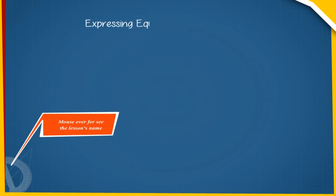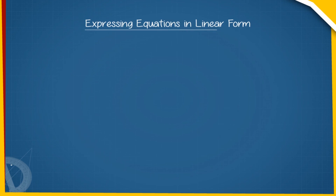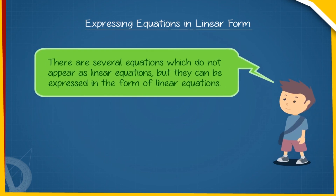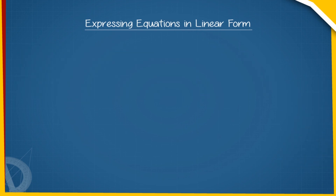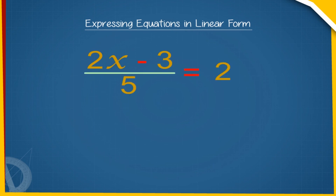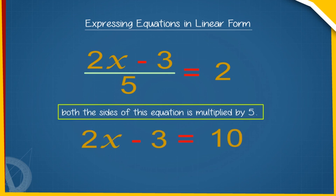Expressing Equations in Linear Form: There are several equations which do not appear as linear equations, but they can be expressed in the form of linear equations. For example, 2X minus 3 upon 5 equals 2 can be expressed as 2X minus 3 equals 10, when both sides of this equation are multiplied by 5.